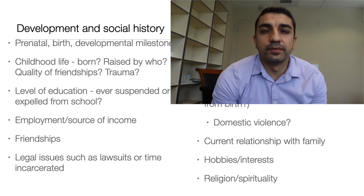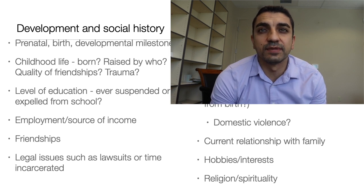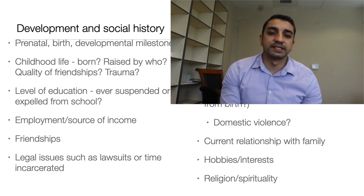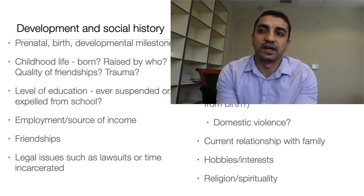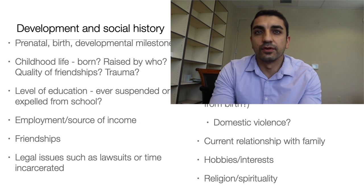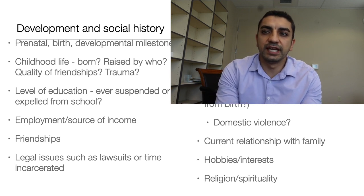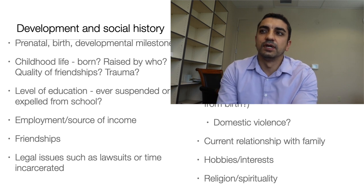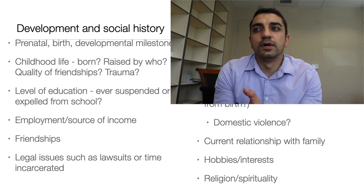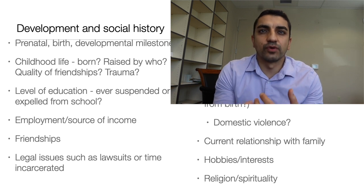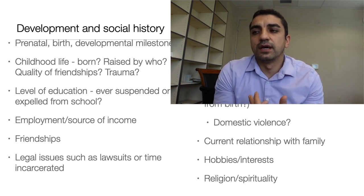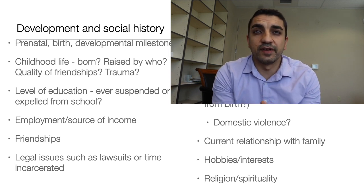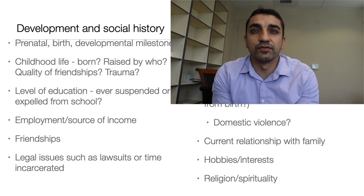The social history can be one of the most interesting and thorough aspects of a psychiatric interview. It can cover basically everything from birth — how they developed, what their childhood was like, their adolescence, adulthood, level of education, friendships, and relationships. It can be very thorough and help direct treatment. You also want to check whether they have hobbies or interests they've had over the years and whether they're still doing them, and whether they are religious or spiritual and attend religious services.